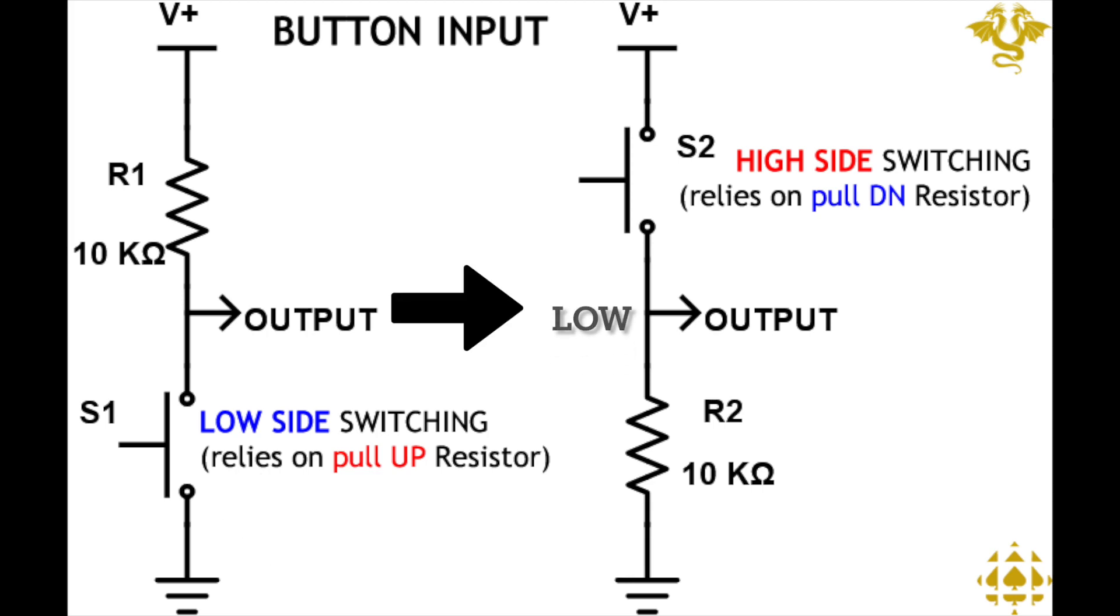The pull-down resistor, shown on the right side, has the opposite configuration. When the pushbutton isn't pressed, the output is low, since V+ isn't connected. When it is pressed, the output is high. This is called high-side switching, as it relies on the pull-down resistor for an input.